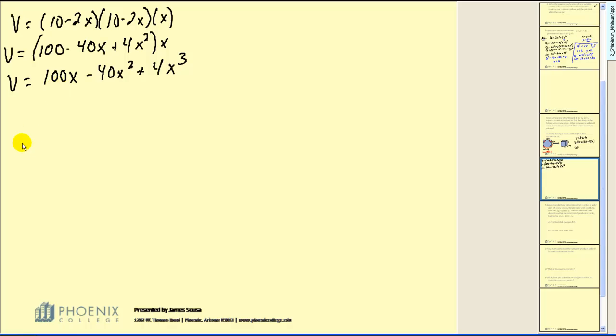We need to find the critical numbers. So we need to find the first derivative and set it equal to zero. I'm going to go ahead and write this in descending order before I try to factor it. Now I will go ahead and factor this.